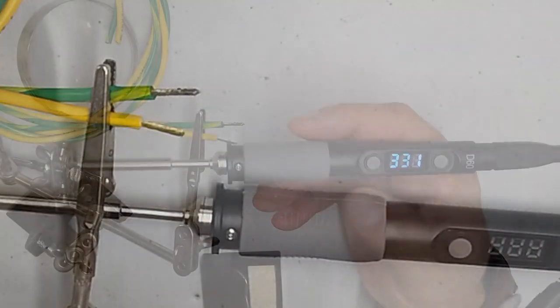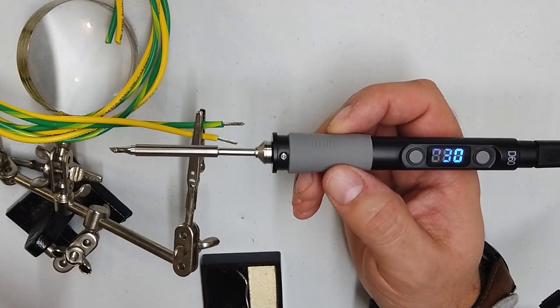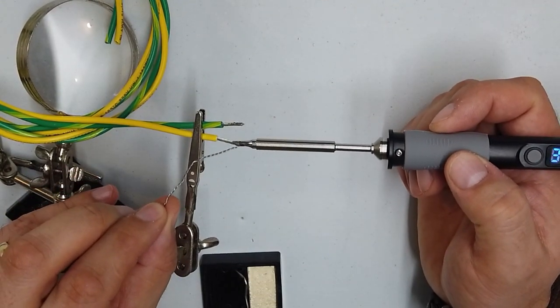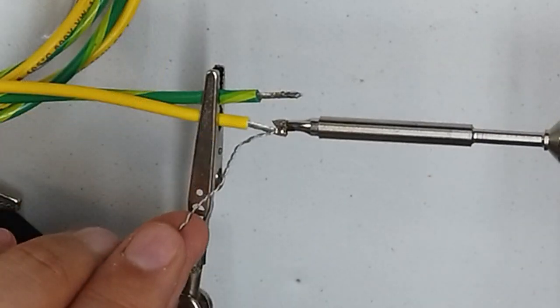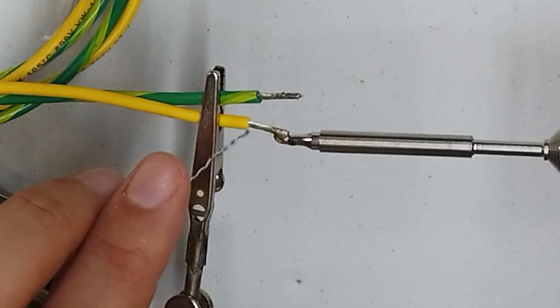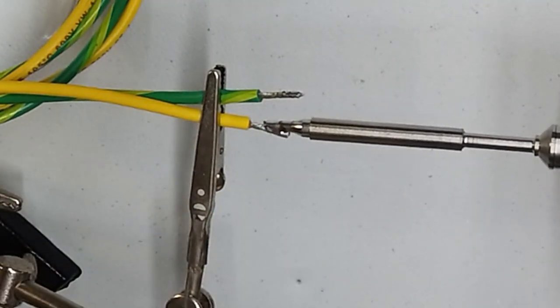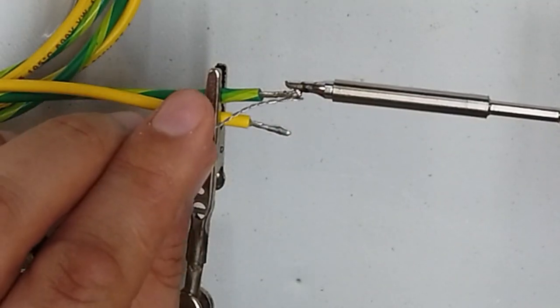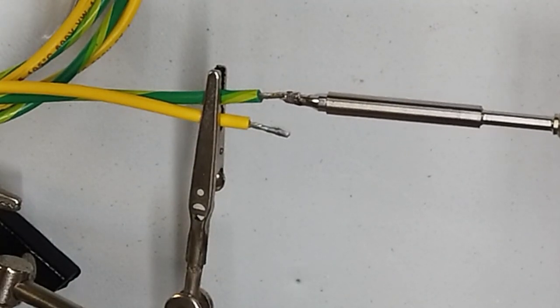Just turning up the temperature on the D60 there to 330. Dead easy to use that interface. No problems at all. And the iron looks like it's up to temperature. So let's go ahead and start tinning this 16 AWG cable. And again, absolutely no problems at all getting that cable tinned. And also heating it back up again. Fantastic.